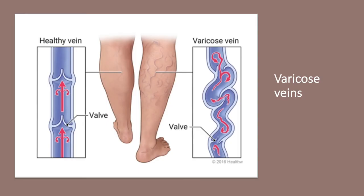Varicose veins are caused by weak or faulty valves within the veins. If the valves are weak or damaged, blood can flow backward and pool in the vein, causing it to stretch or twist. Generally these don't have major health concerns — some aching — and are mostly cosmetic. In severe cases surgery may be done, or compression socks can help, as worn by people on their feet all day like nurses.